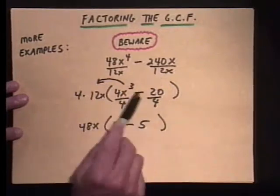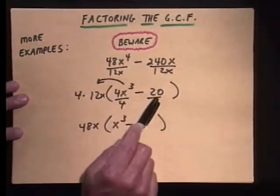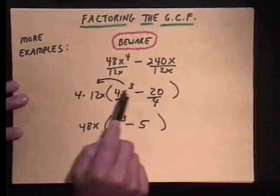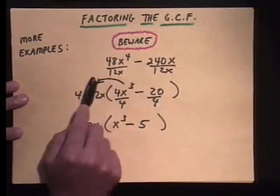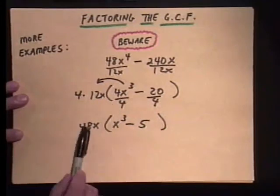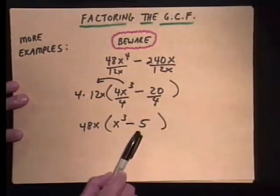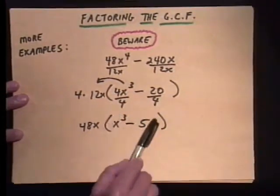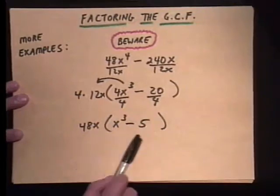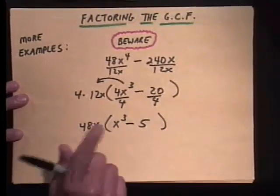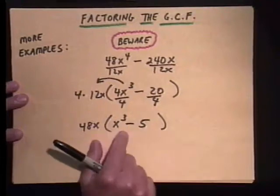I was left with the 4x cubed minus 20. And I said, aha, there's still something that goes into each one of these. So I had to take the additional four out. So not only check by distributing it back through, make sure that in all parentheses, there's nothing left in common here. And that will be a common theme throughout the rest of our factoring adventures.